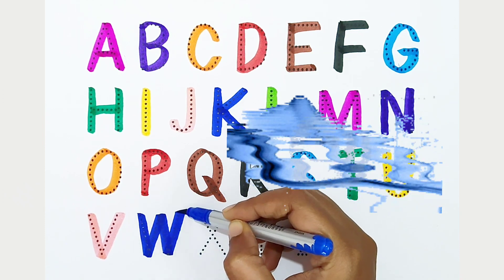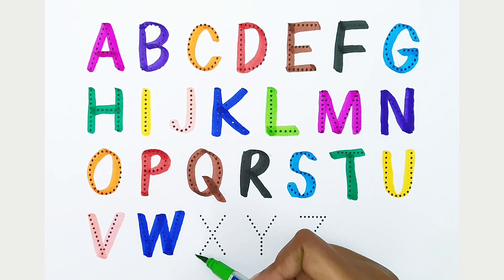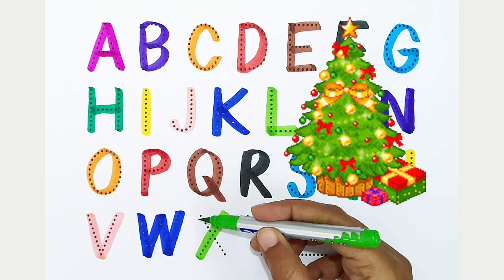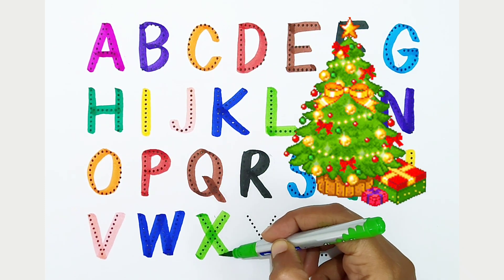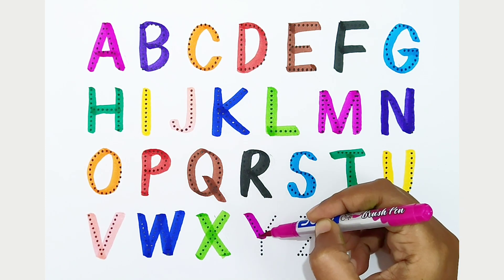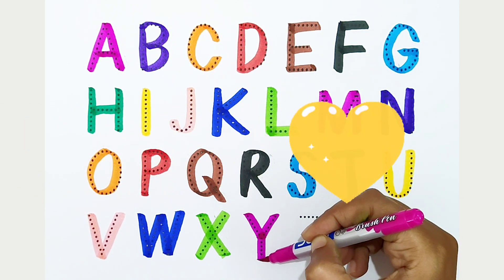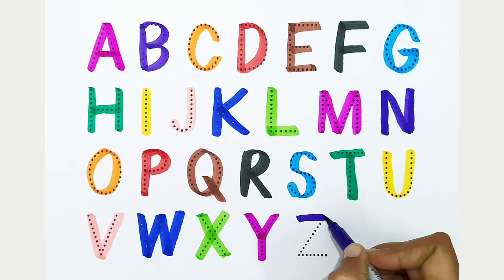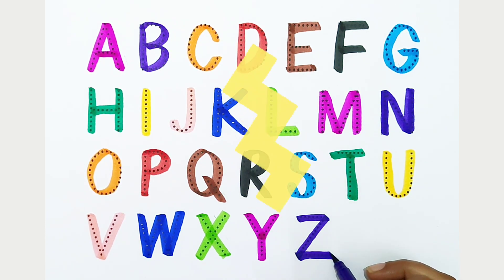X - light green color. X is for Xmas. Y - dark pink color. Y is for yellow. Z - violet color. Z is for zigzag.